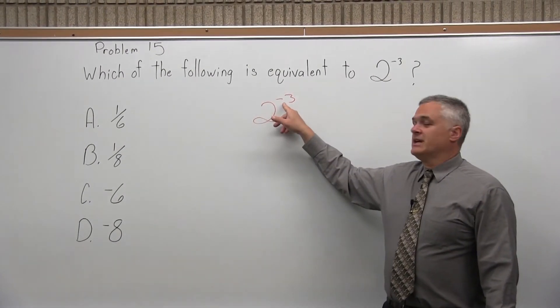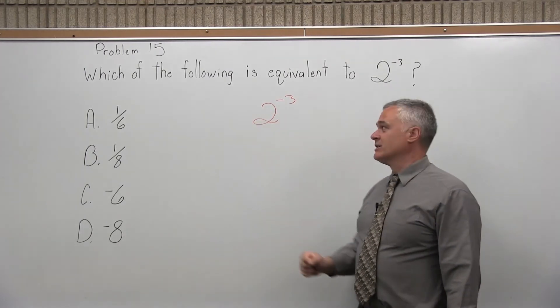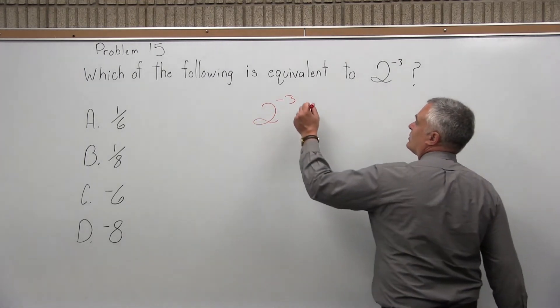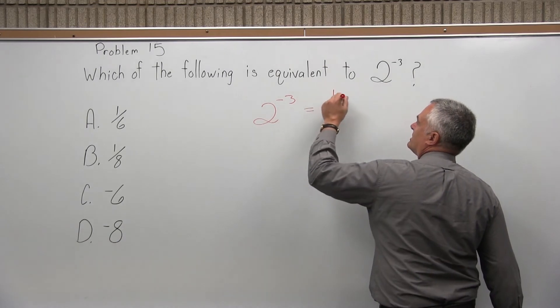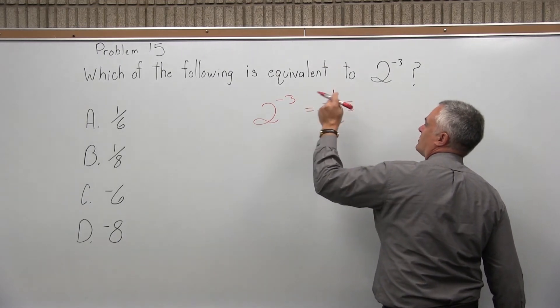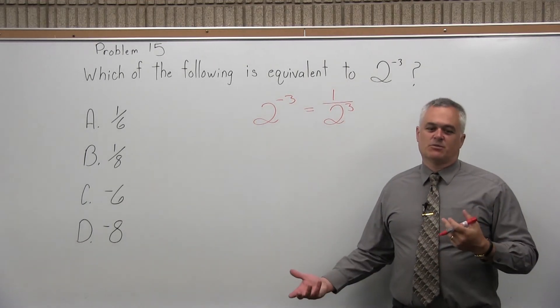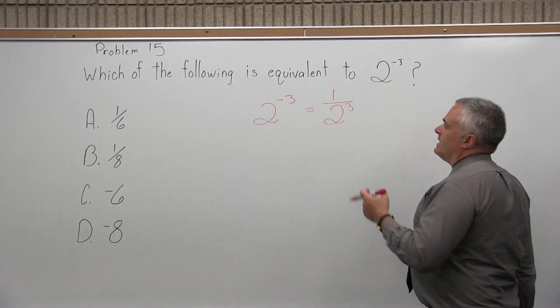The negative in the exponent means that the base is really in the denominator of a fraction. So 2 to the negative third power is really the same as 1 over 2 to the positive third power. That's what the negative exponent means. It means that the base and the exponent are really in the denominator.